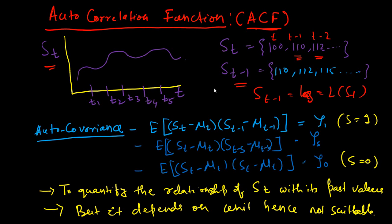We then define a term known as autocovariance, which is like covariance but applied to the same series. Since the stock price is just one series, we give it the name autocovariance — it is a special type of covariance where the two series come from the same original series, that is, st and st minus 1 are both coming from the stock price of a particular stock. We define it as the expectation of (st minus mu_t) multiplied by (st minus 1 minus mu_{t-1}), where mu_t is the mean of st and mu_{t-1} is the mean of st minus 1.